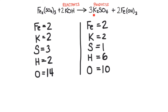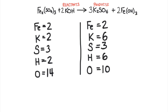That's going to give us three sulfurs on this side, but it also is going to affect the amount of potassium — changing it from two potassiums to six potassiums. It's also going to change the number of oxygen atoms here from four to 12 oxygens, plus the other six oxygens in this other compound, to give a total of 18 oxygen atoms.